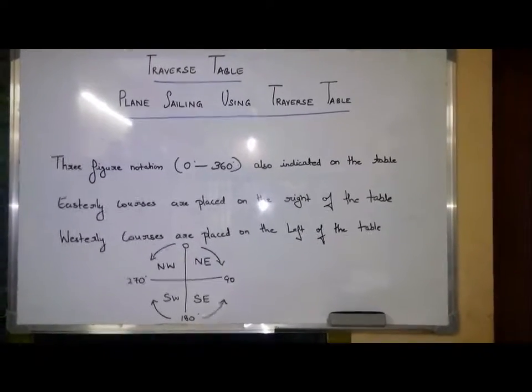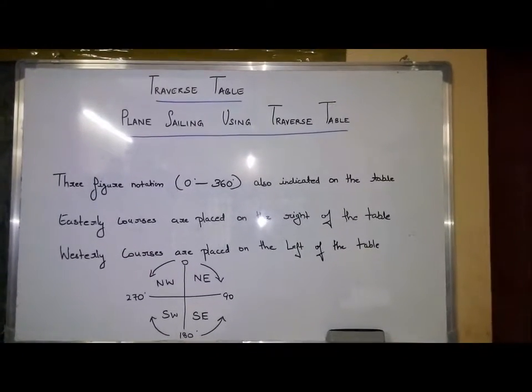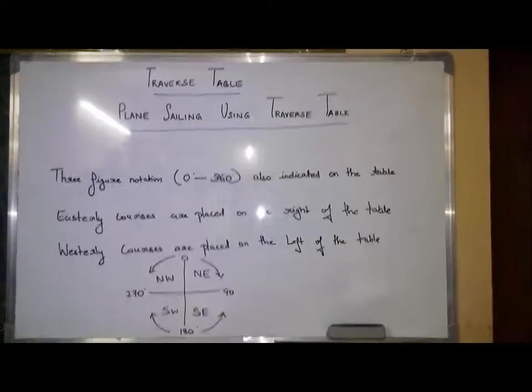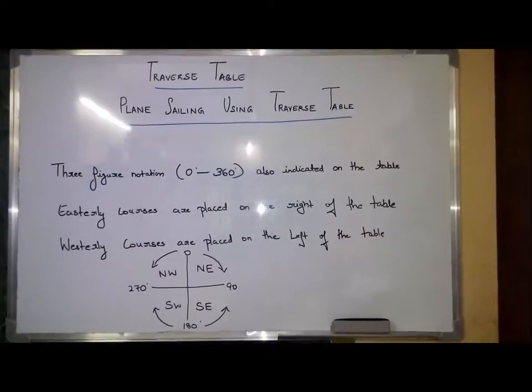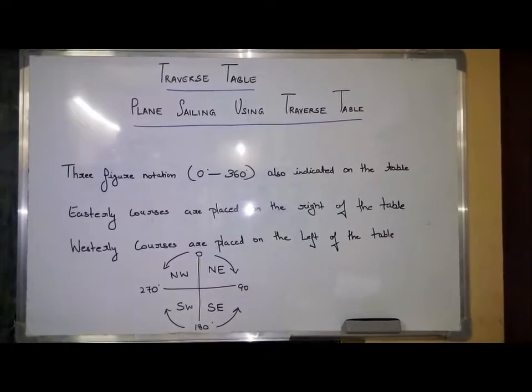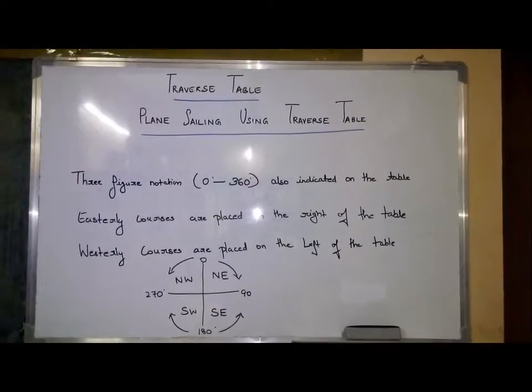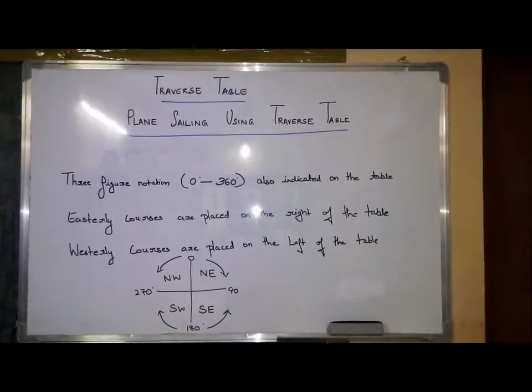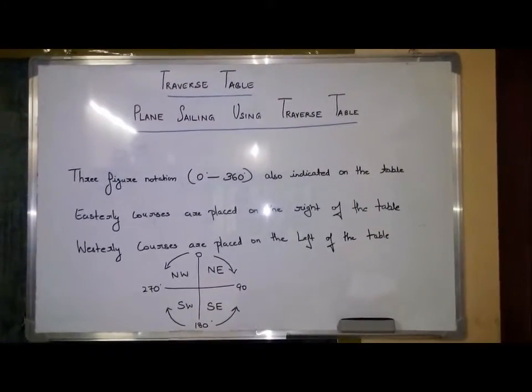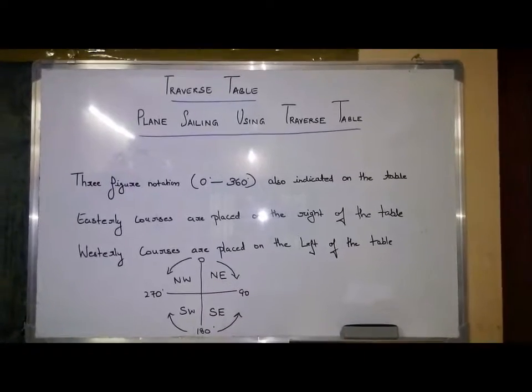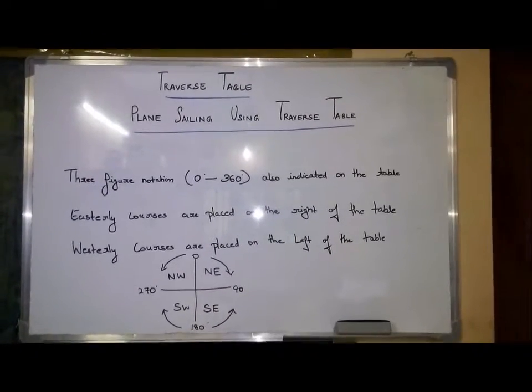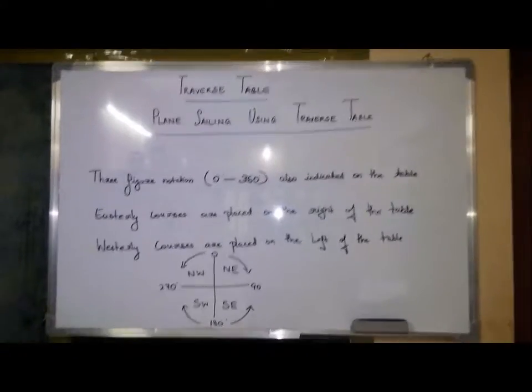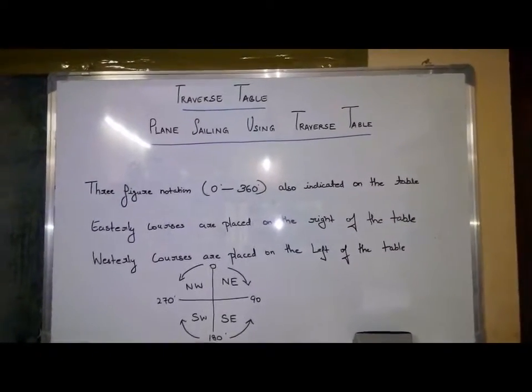Three figure notation 0 to 360 degrees also indicated on the table. Easterly courses are placed on the right of the table. Westerly courses are placed on the left of the table. Here we can see the quadrants: northeast, southeast, southwest, northwest. Northeast is the first quadrant, southeast is the second quadrant, southwest is the third and northwest is the fourth quadrant.